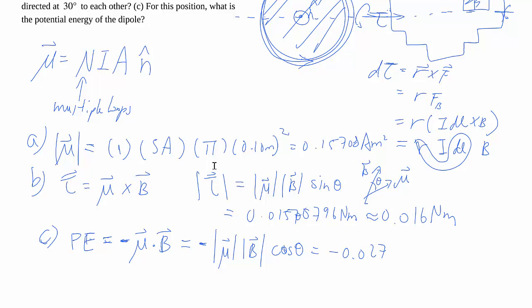And in this case, we'll get a negative potential energy. And in this case, we do turn newton times meters into joules as per convention.